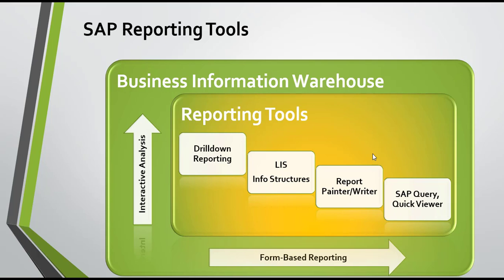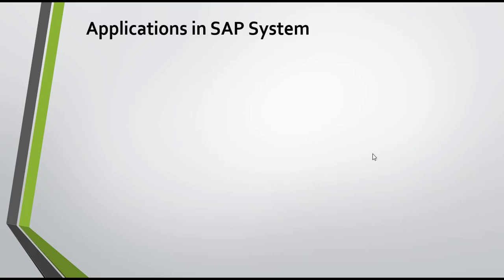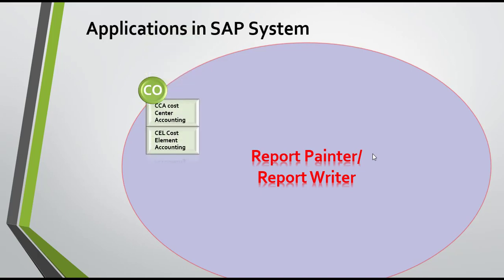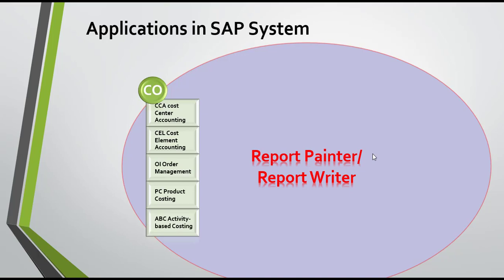Various SAP applications can use the Report Painter functionality. Under the Controlling module, you can use it for cost center accounting, cost element accounting, internal orders, product costing, and activity-based costing. In FI, you can use it for GL transaction figures and special purpose ledgers.